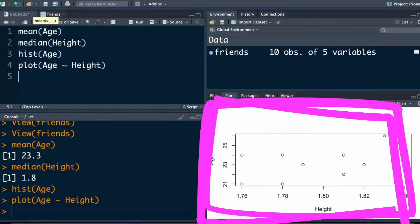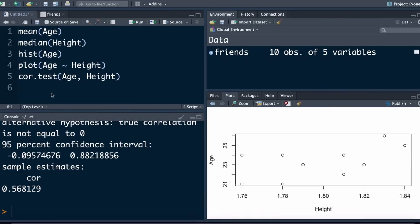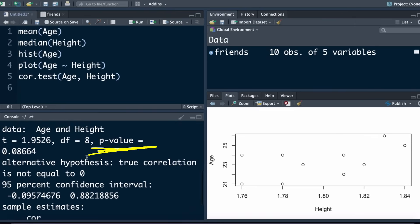And we might want to know if there is a statistically significant correlation between age and height. And, as we can see in this particular case, there isn't.